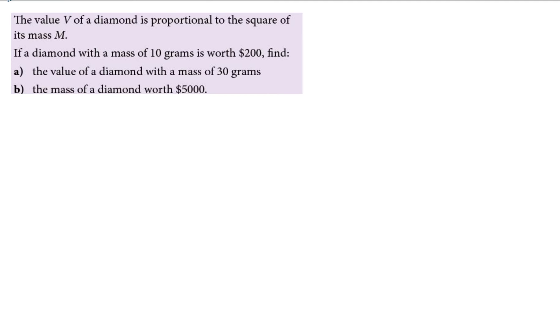So this is a more direct question, but a lot of the times you will get a worded problem. So have a read through this question - they're telling you proportional to the square of its mass. So the value of the diamond is proportional to the square of the mass. So always try and translate it this way, and I can convert this to such. They've given us two values - if a diamond has a mass of 10 grams, then it's worth $200. So the value is 200 if the mass is 10 grams.